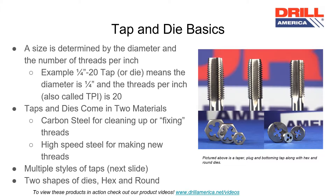For example, a quarter inch by 20 tap or die means that the diameter is one quarter inch and the threads per inch, also called TPI, is 20.